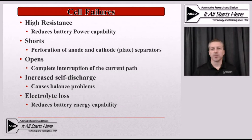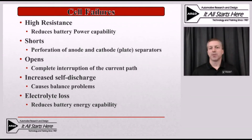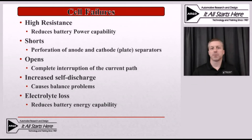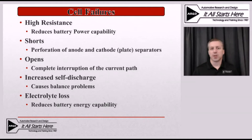The last cell failure type is electrolyte leakage. Some of these batteries have a vent that is not designed to open under normal operation, but can open if the cell gets too much internal pressure. If that vent opens and doesn't reseal properly, or if electrolyte seeps out around the positive and negative terminals, or through a crack in the battery assembly, we will have electrolyte loss. Obviously, if there's less electrolyte in the cells, they can't produce as much energy because there's less electrolyte in contact with active material, and that cell becomes permanently limited.